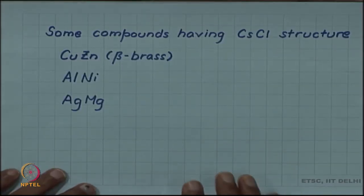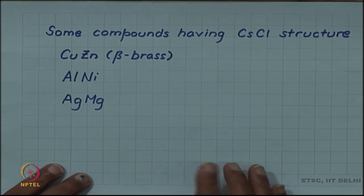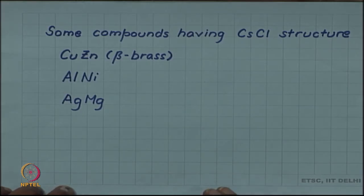Caesium chloride is a prototype structure. Any AB compound where one ion sits at the corners and the other sits at the body center of a cube is called a caesium chloride structure.